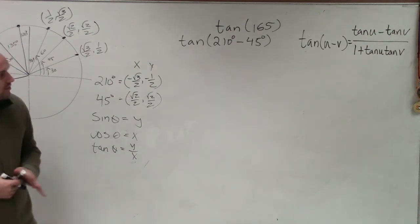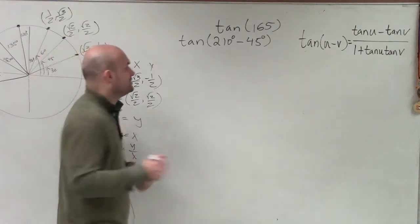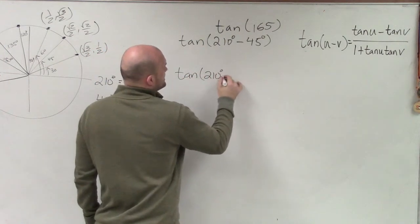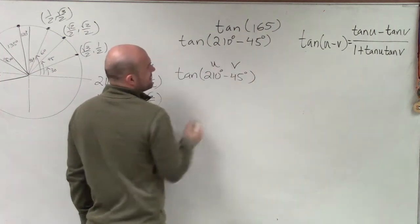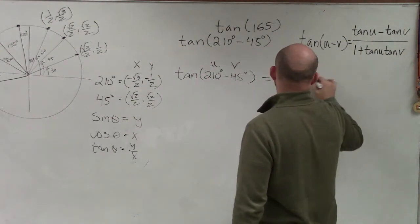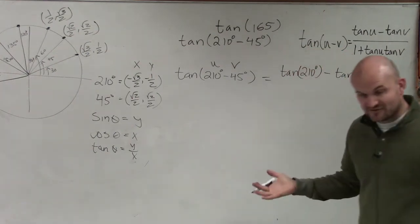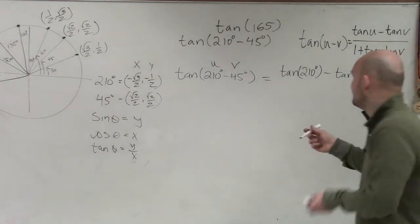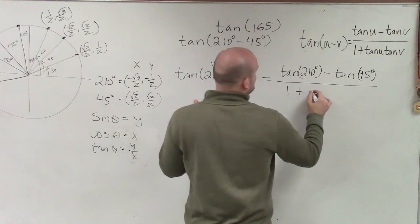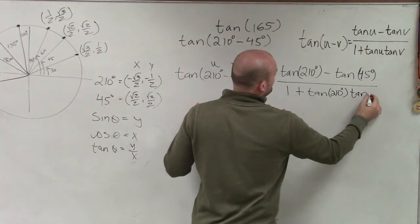When you're getting started with this, it's very important that you plug in your angles. Once you're more familiar with this you can bypass the step, but when starting out it's helpful to write: tangent of 210 degrees minus 45 degrees, where that's u and that's v, equals tangent of u which is 210 degrees, minus tangent of v which is 45 degrees, divided by 1 plus tangent of u which is 210, times tangent of v which is 45.